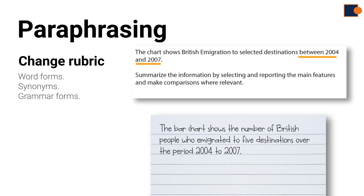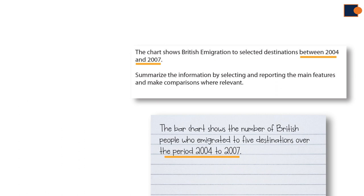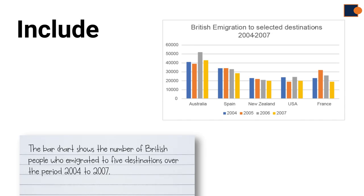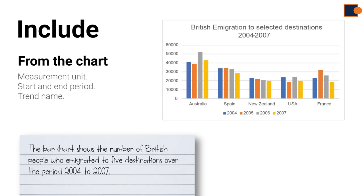'Between 2004 and 2007' is written as 'the period 2004 and 2007.' You should also include any information which is not shown in the rubric but in the chart itself. This information can be the measurement of unit, start and end period, and sometimes the name of the trend.